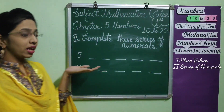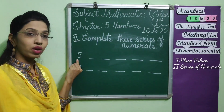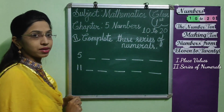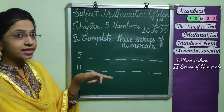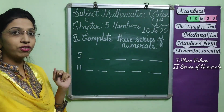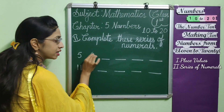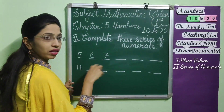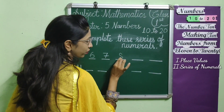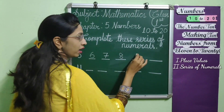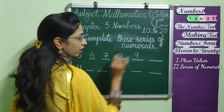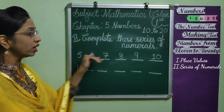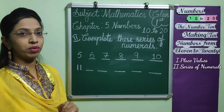Here are some examples. Starting from number 5 with a few blanks — what is the next number? After 5, it is 6. Then the next number is 7. Next number is 8. Then 9. Then, the last is 10. This is called series of numerals.